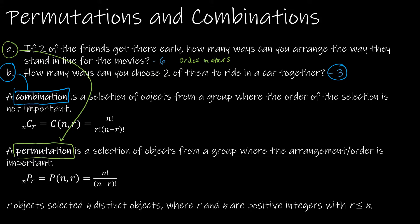For a combination, we have N objects — in this case three friends — so N = 3. You might see this written as 3C2 or C(3,2). Either way it means the same thing. The formula is N factorial divided by R factorial times (N minus R) factorial: three factorial divided by two factorial times (3 minus 2) factorial. That's (3×2×1) divided by (2×1) times 1, which gives us three over one, which is three. That matches what we found by hand.